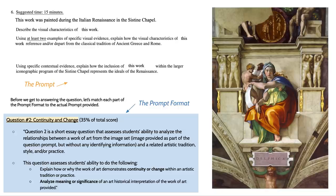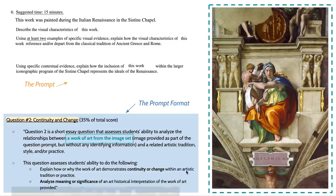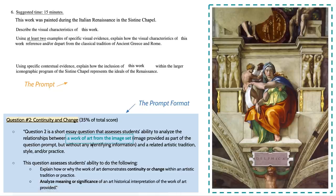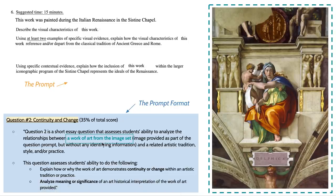So again I have the prompt and the prompt format here. We have a work of art from the image set right here. It says the image provided will not have any identifying information. However, this kind of operates in opposition to this concept of a related artistic tradition, style, or practice — it's very hard to say it represents the ideals of the movement in which it was made. I can't guarantee it, but they will probably provide some information about the time period in which the piece was made, so you at least have something to work with.